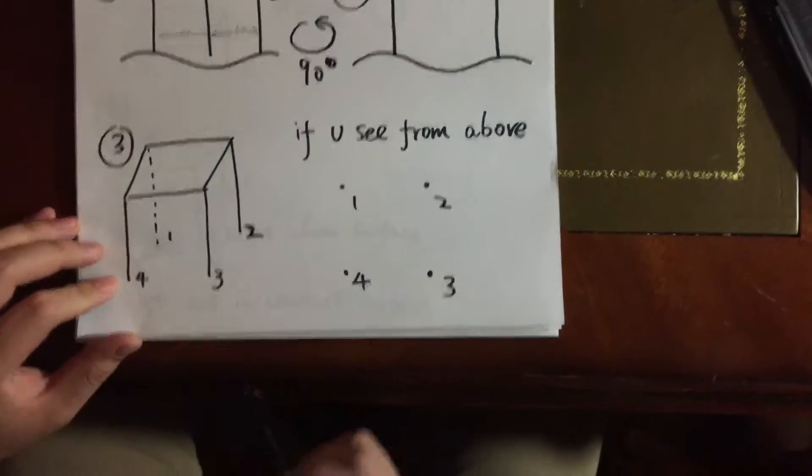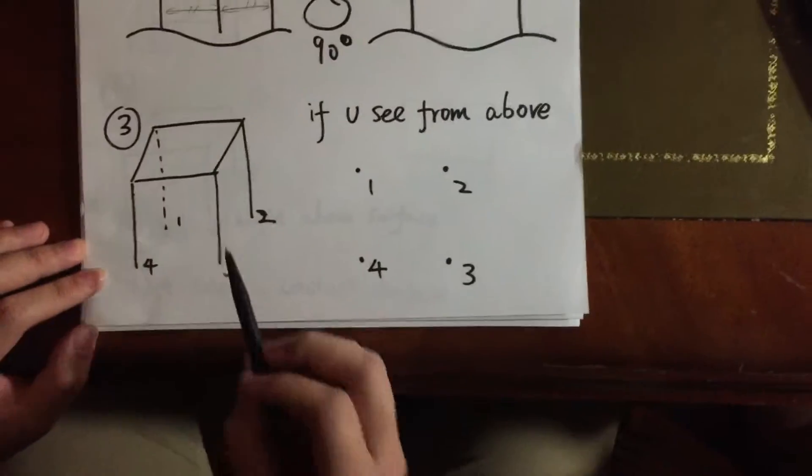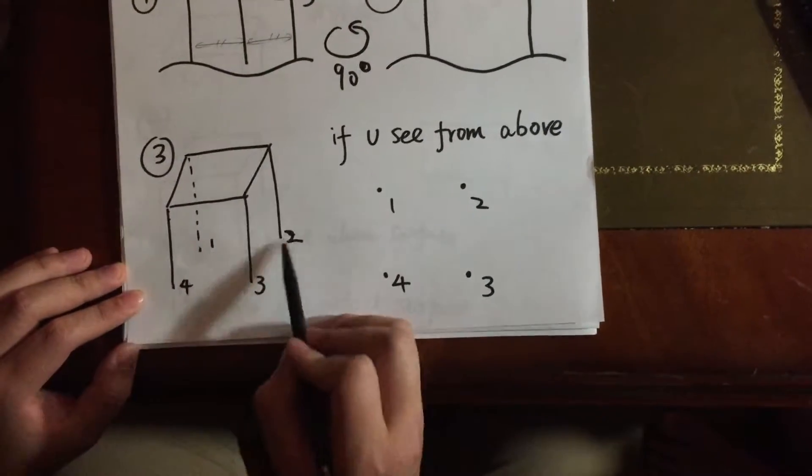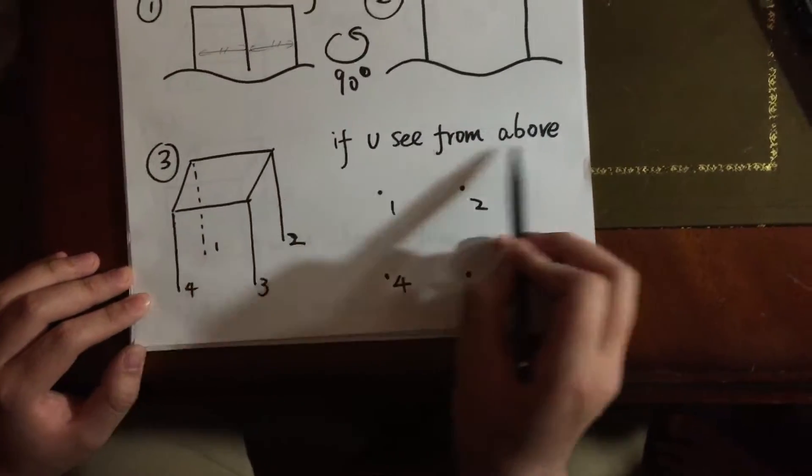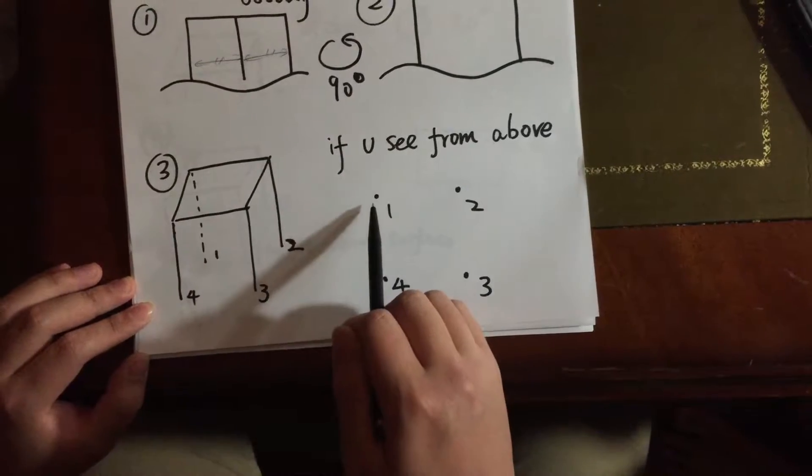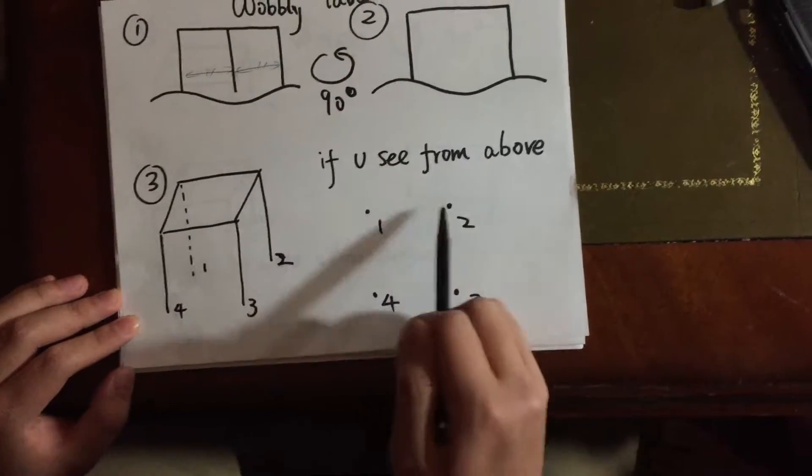let's go to the 3D dimension. Assuming there's a table with the four equal length feet, 1, 2, 3, 4. And if you see from above, this is how the point where in contact with the surface, 1, 2, 3, 4.